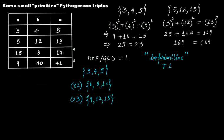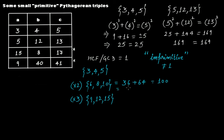From primitive Pythagorean triples you can form as many imprimitive Pythagorean triples as you like by simply multiplying with different integers. For example, multiplying 5, 12, 13 by 2 gives 10, 24, 26 — an imprimitive triple. To verify: 6 squared plus 8 squared gives 36 plus 64, which should equal 100, and it does equal 100. So it is a Pythagorean triple, but imprimitive because the HCF is 2, not 1.